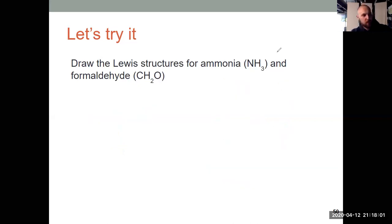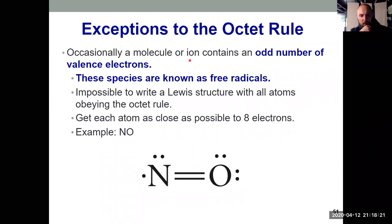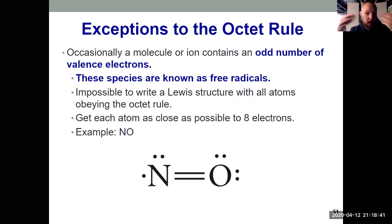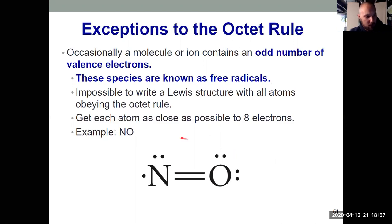You'll have plenty of Lewis structure practice on your sapling homework and in videos four and five as well, since formal charge continues with these ideas. Now there are some exceptions to the octet rule. One exception involves an odd number of valence electrons — when that happens, it's impossible to pair everything up, making it impossible to satisfy the octet rule. These species are known as free radicals. In that case, you try to get as close to eight as possible. In this Lewis structure, nitrogen only has seven electrons surrounding it.